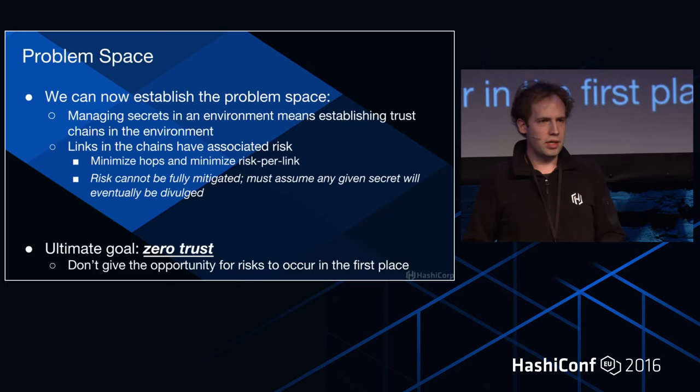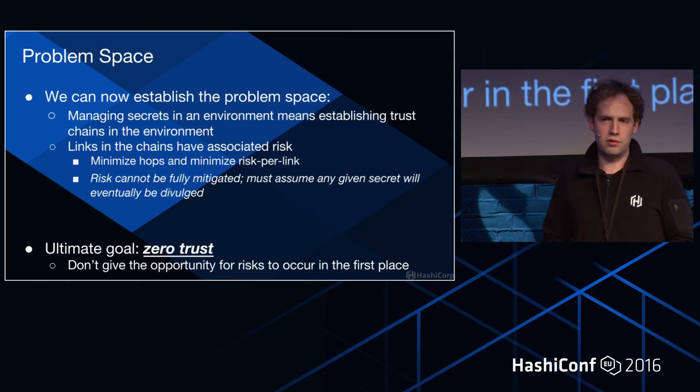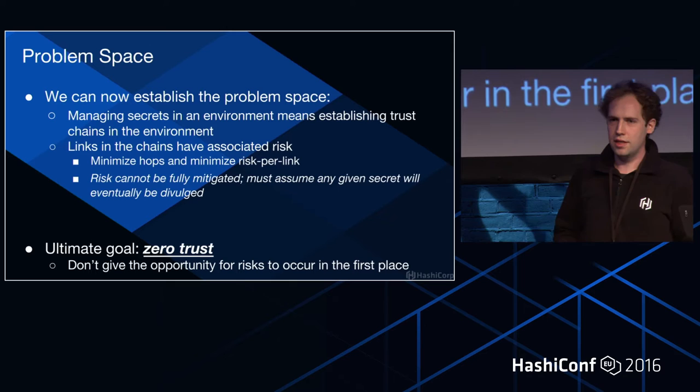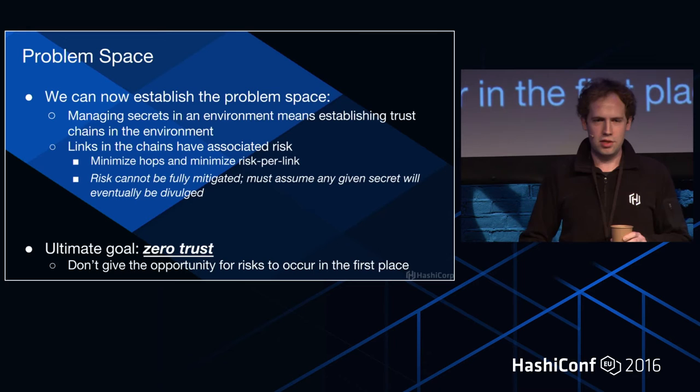You can't fully mitigate risk. You should proceed on the assumption that everything will eventually get exposed, so what you want to do is make that chance as low as possible. There's no such thing as zero risk. The ultimate goal is also zero trust — don't give the opportunity for risks to occur in the first place. There's a saying that the only truly secret thing is something encrypted with a one-time pad with the code book burned — you can get as close to that as possible.